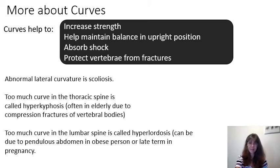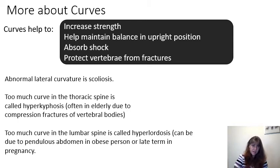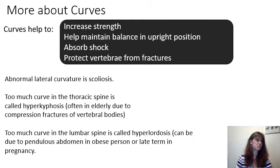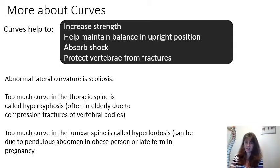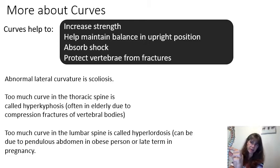Individuals may have a hyperlordotic curve. With hyperkyphosis, oftentimes that occurs because of compression fractures. Compression fractures usually involve the anterior portion of the vertebral bodies in the thoracic spine collapsing. So if those vertebral bodies collapse, that is going to cause that hyperkyphosis.